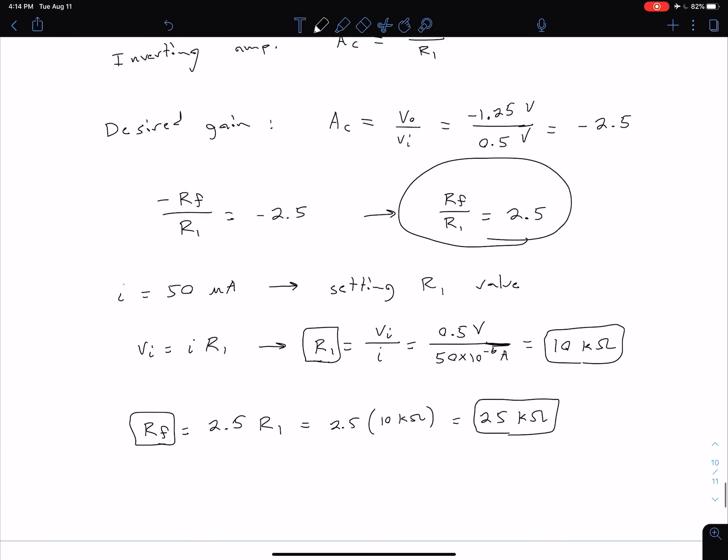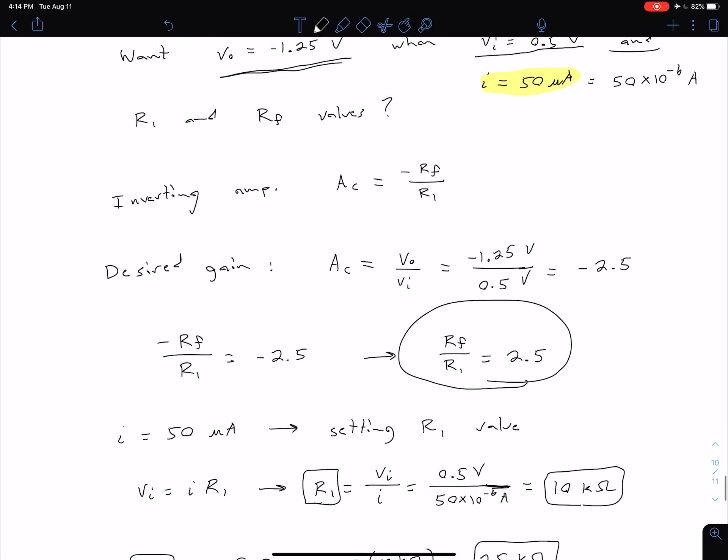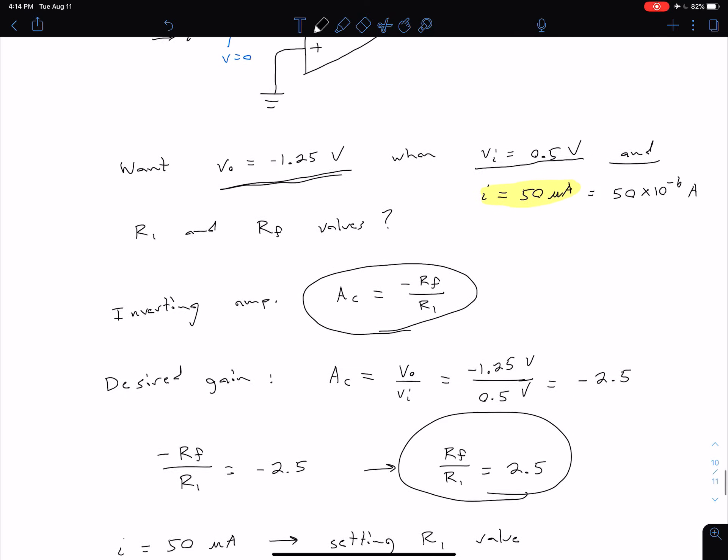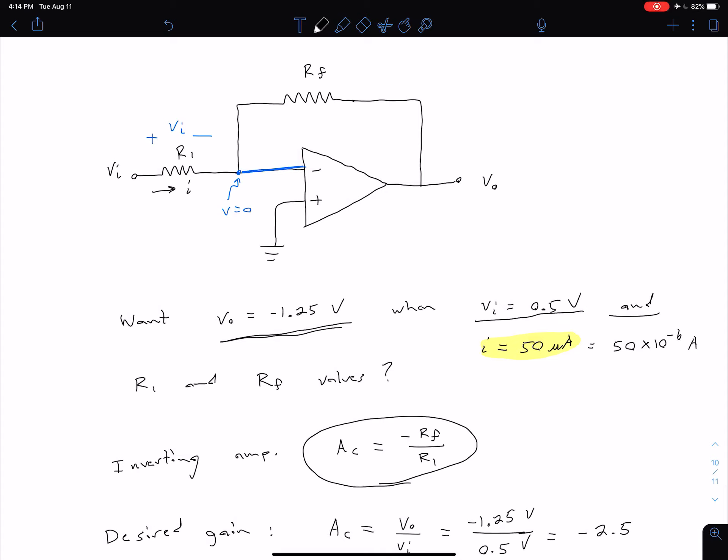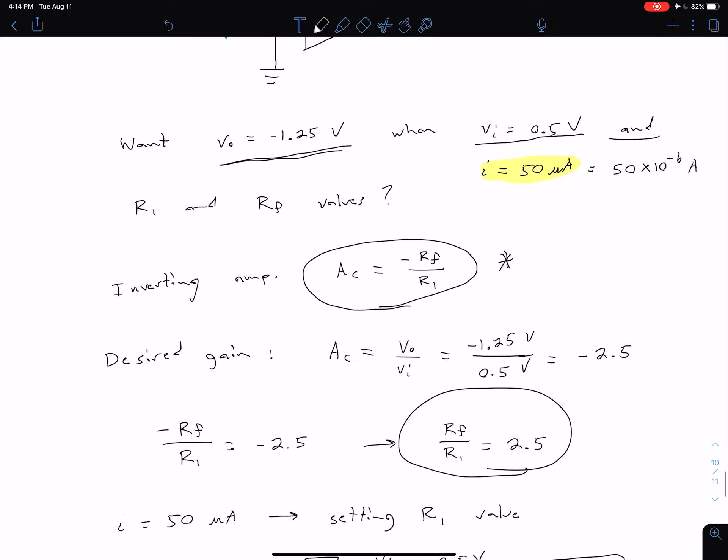And so an important thing to note is because we already had this general relationship for our inverting amplifier configuration, we did not have to start over with our ideal op amp properties and say we have zero current into our terminals, we have zero differential input voltage, we could come directly here, and that made our analysis a lot quicker.